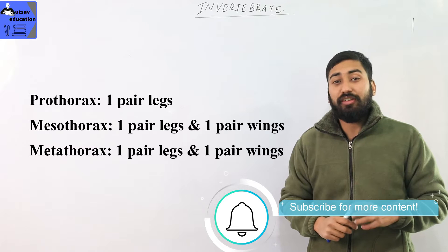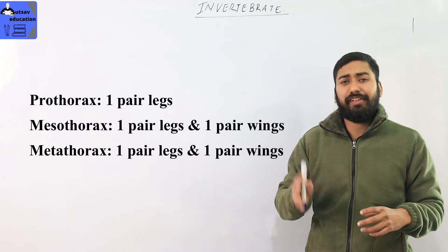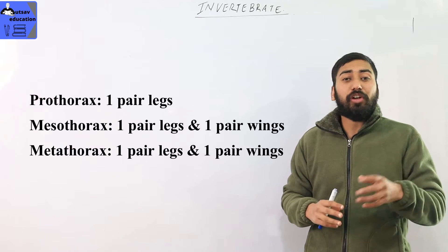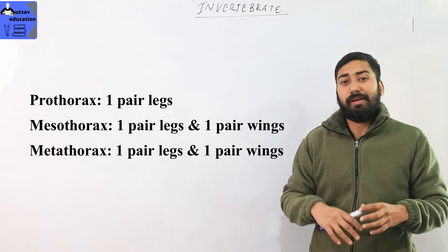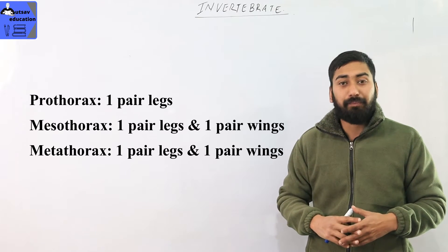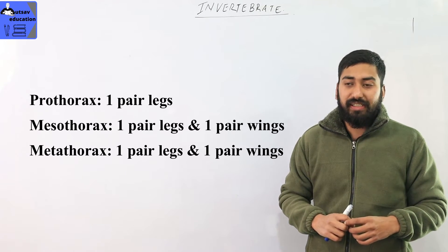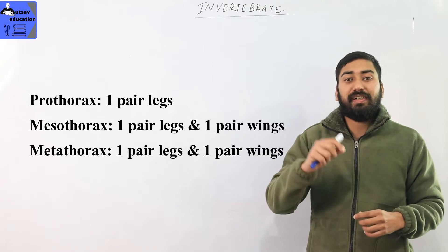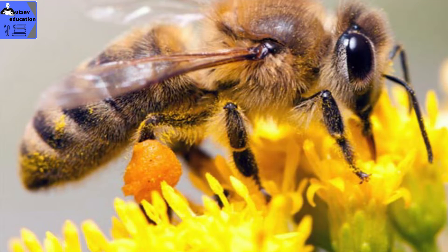The hind limb has a pollen basket. When the bee collects nectar, pollen grains are stored in this pollen basket.